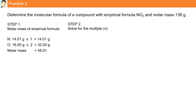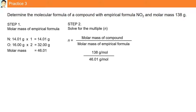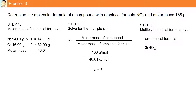The second step is to solve for the multiple N. N equals molar mass of compound divided by molar mass of empirical formula: 138 grams divided by 46.01 grams, giving N equal to 3. The third step: multiply the empirical formula by N. We have 3 times NO2, giving a molecular formula of N3O6 — the formula for a substance with molar mass 138 grams and empirical formula NO2.